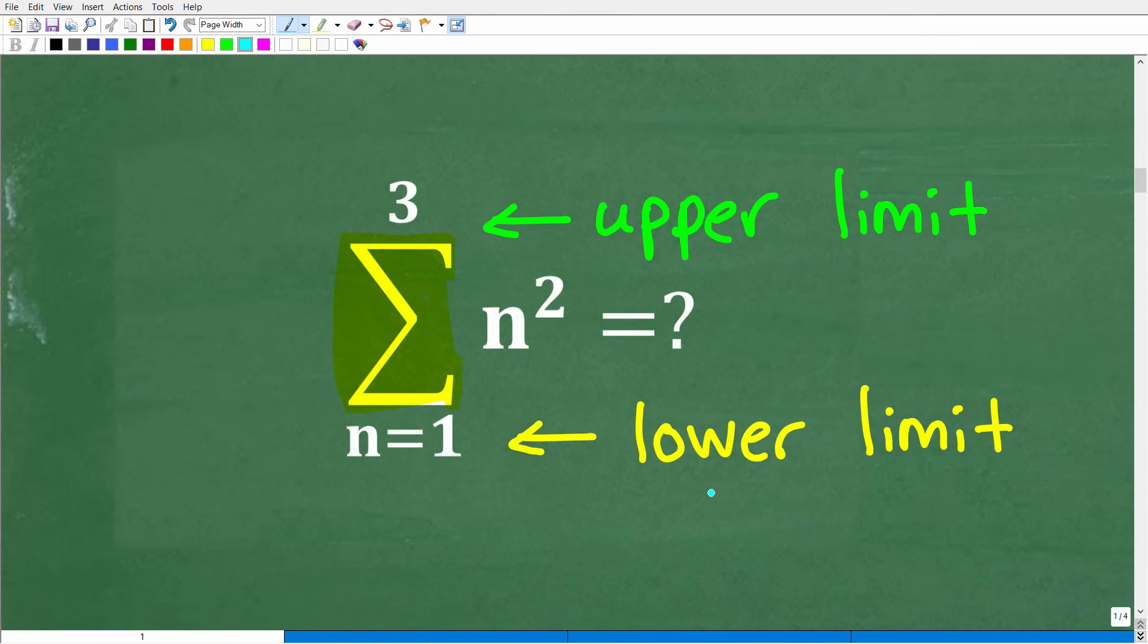Okay, so let's talk about these lower limits and this upper limit. So here, this is n is equal to 1. So we're going to start off with n is equal to 1, and we have an n squared here. So it looks like we're probably going to replace this n squared, this n, with 1. And that's exactly what we're going to do.